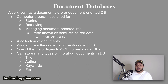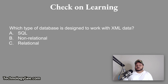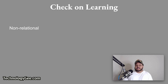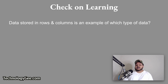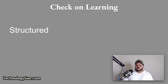Let's do some check on learning. Question one: which type of database is designed to work with XML data? The options are SQL, non-relational, relational, or any of the above. The correct answer is non-relational databases are designed to work with XML data. Question two: data stored in rows and columns is an example of which type of data? The options are non-structured, structured, semi-structured, or document. The correct answer is structured data.